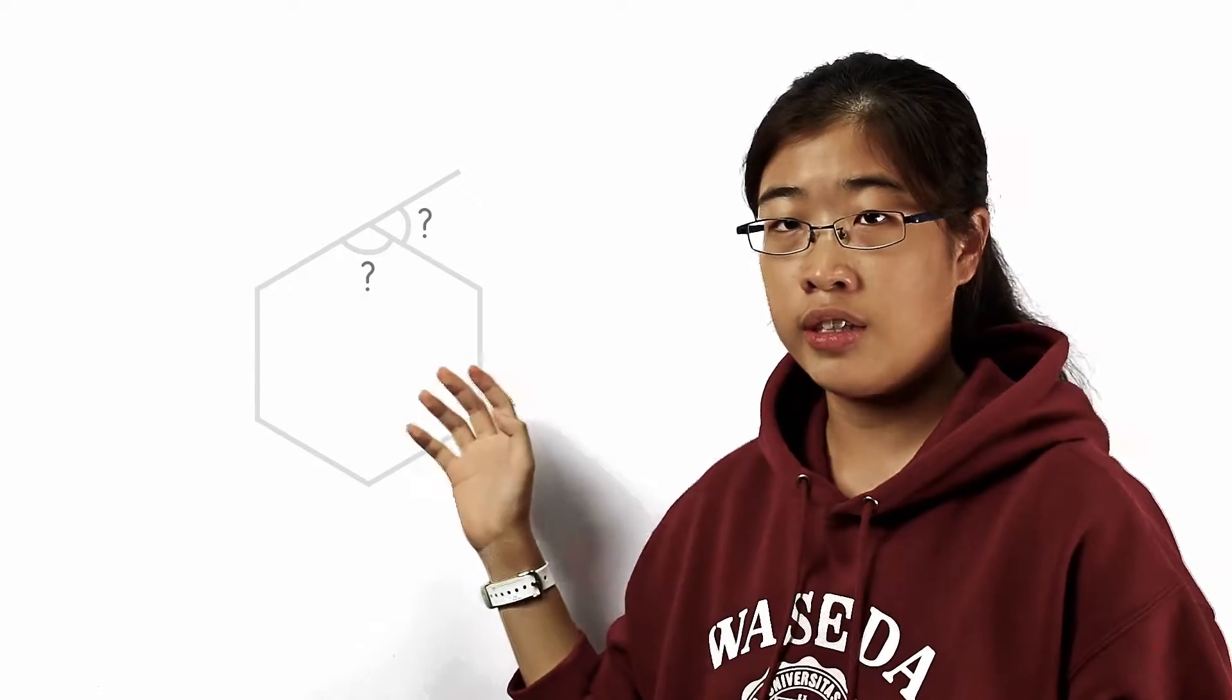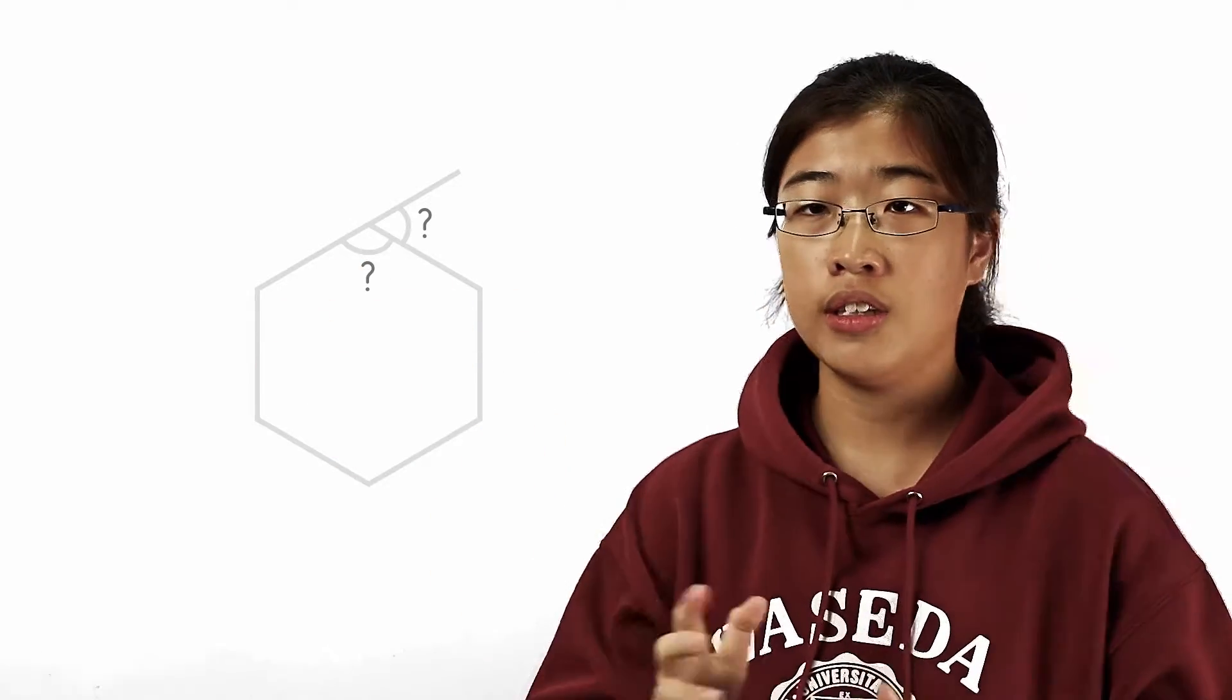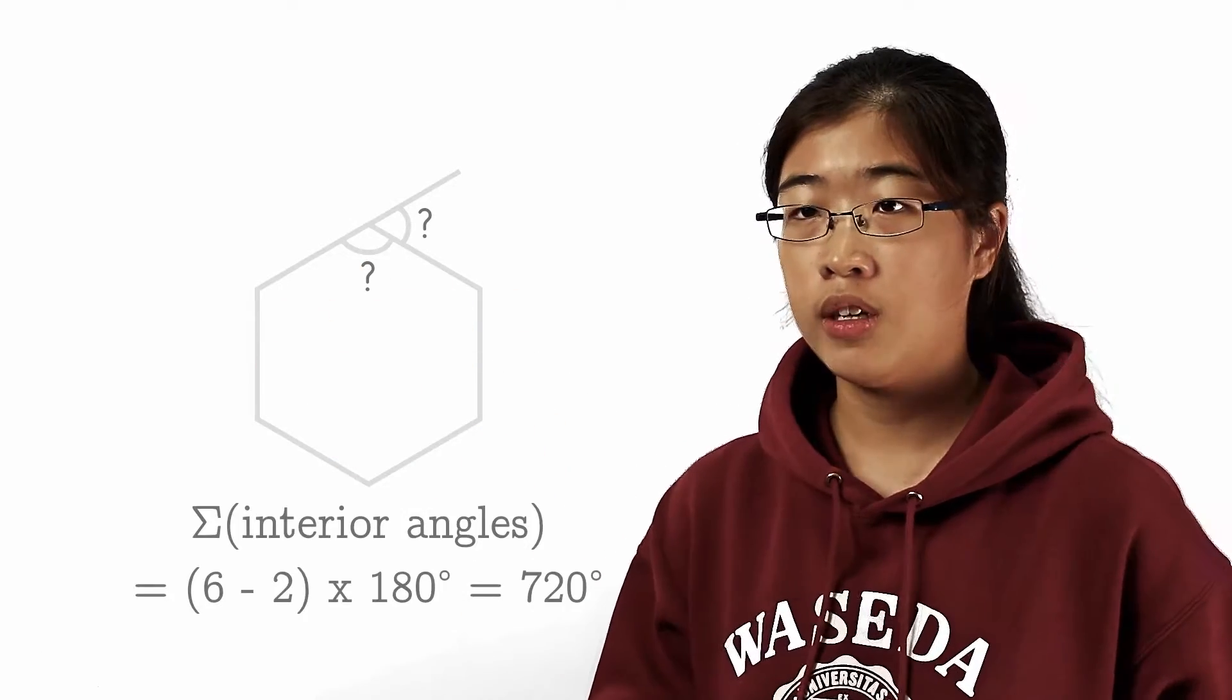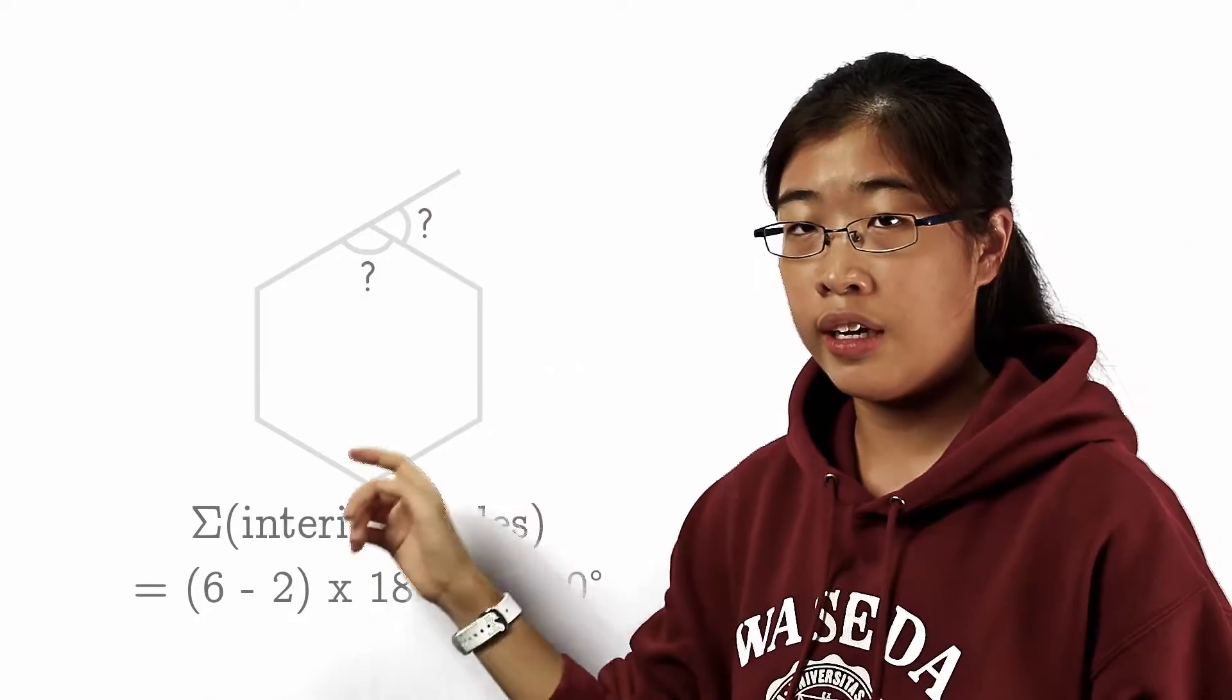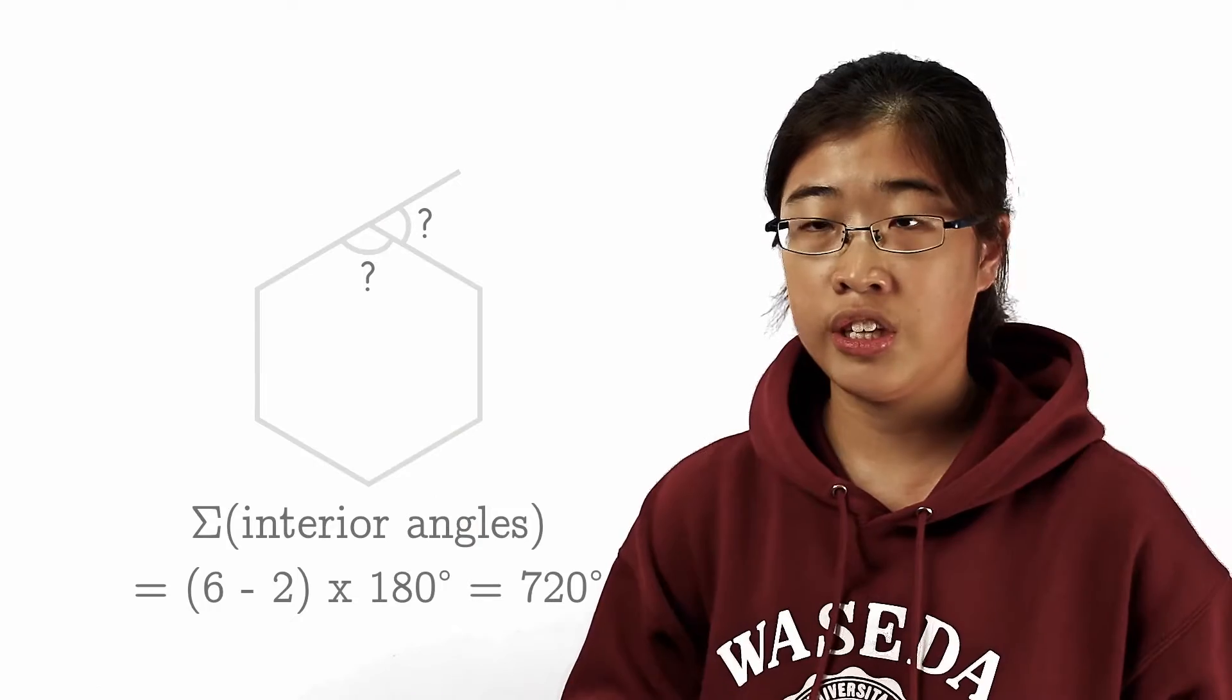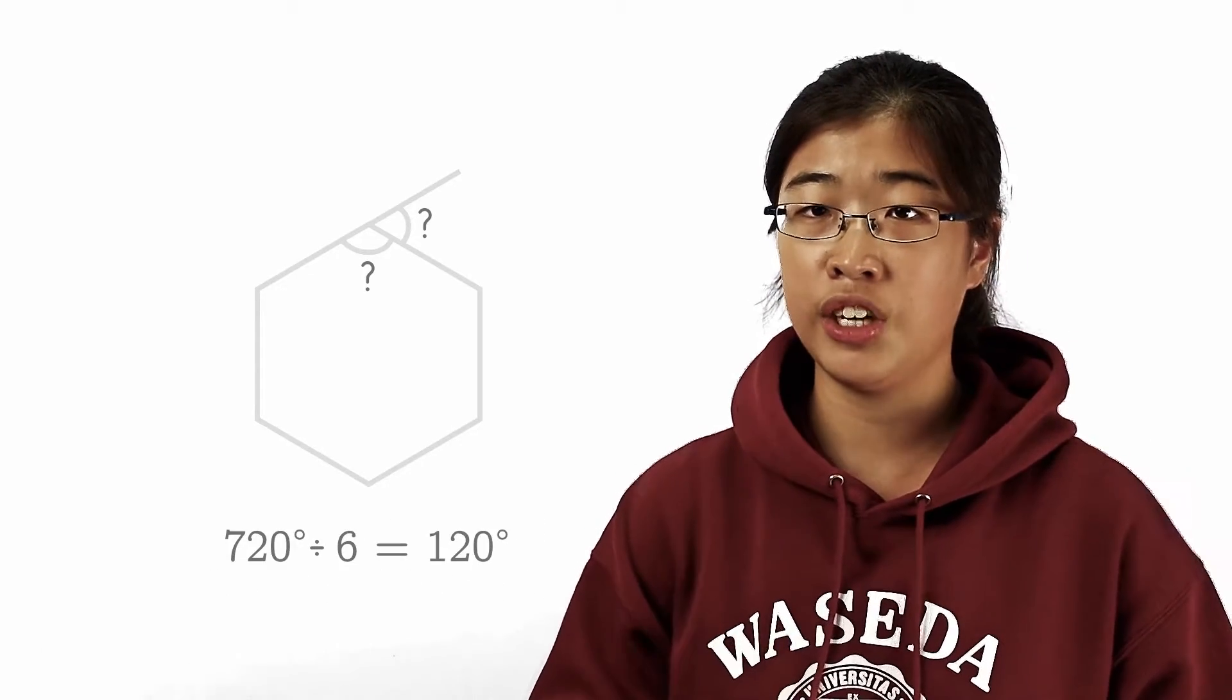Since it is a regular hexagon with 6 sides, the sum of all interior angles is 720 degrees. This means that since it is a regular hexagon, we know that all 6 angles are equal. So each interior angle measures 720 divided by 6, which is 120 degrees.